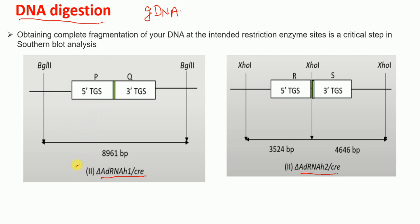For the Delta adRNAs1 Cre knockout, the genomic DNA was digested using BglII. BglII cuts upstream of the 5' targeting sequence and downstream of the 3' targeting sequence (TGS), resulting in an 8.9 kb fragment. There will be other fragments since we are digesting genomic DNA, but one fragment will be 8.9 kb when we use BglII.